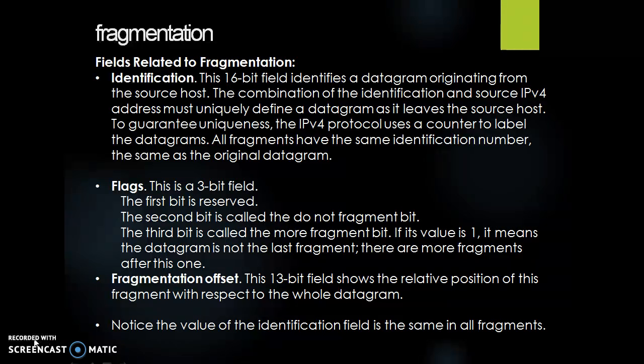Next is flags. This field is used in fragmentation. This is a 3-bit field. The first bit is reserved. The second bit is called the do not fragment bit. If its value is 1, the machine must not fragment the datagram. If it cannot pass the datagram through any available physical network, it discards the datagram and sends an ICMP error message to the source host.